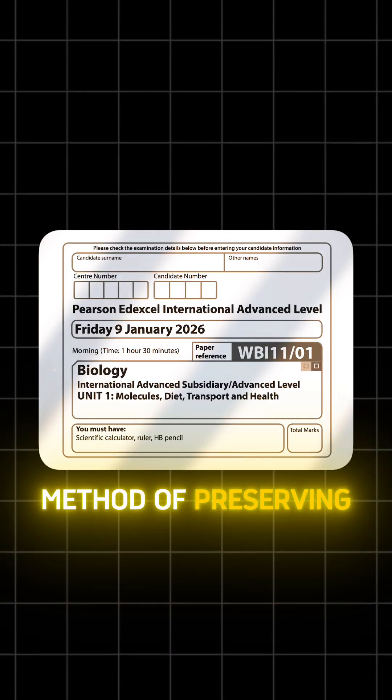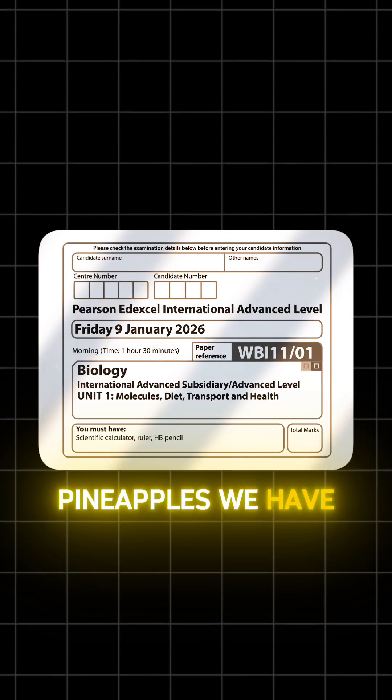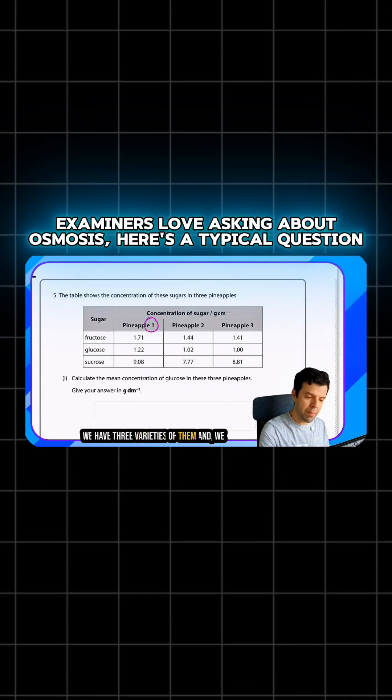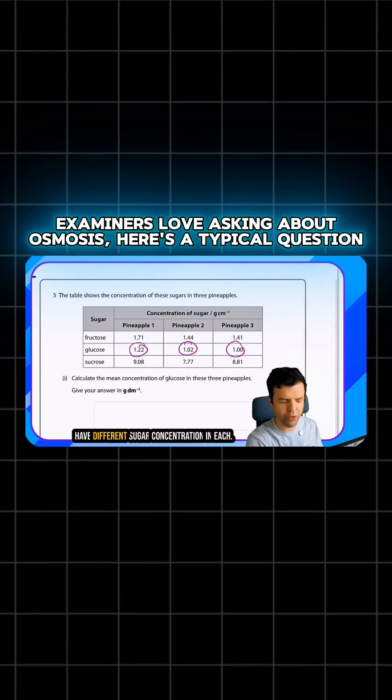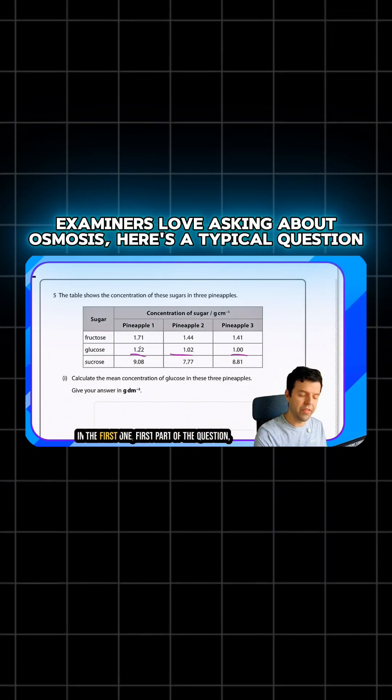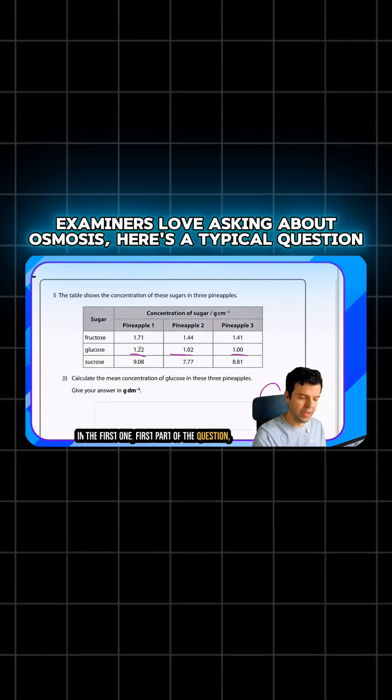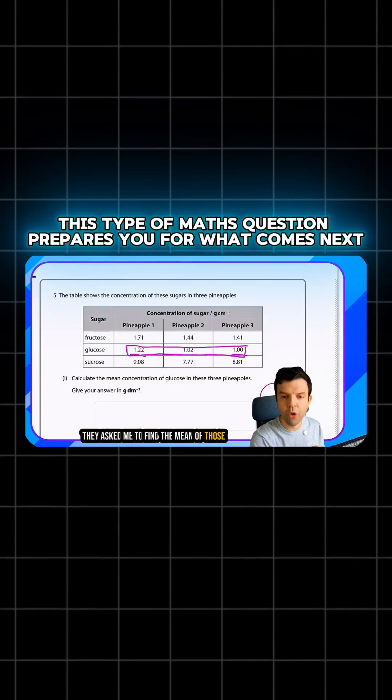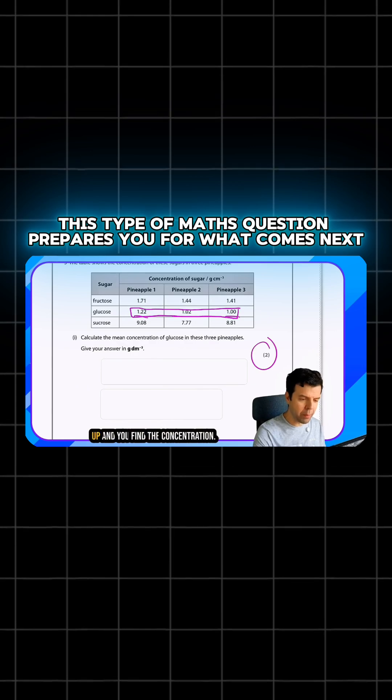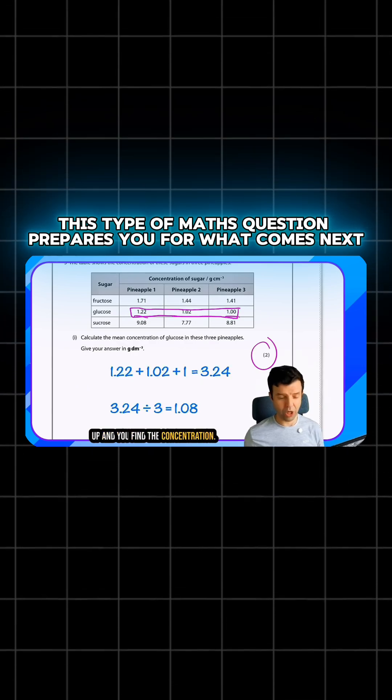We have a method of preserving pineapples. We have three varieties of them and different sugar concentrations in each. In the first part of the question, they asked me to find the mean of those three numbers, meaning you add them up and find the concentration.